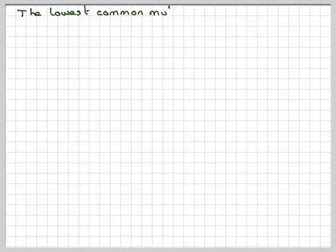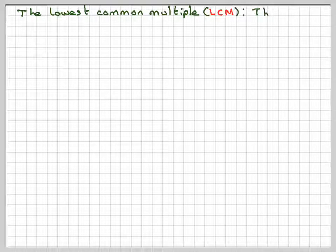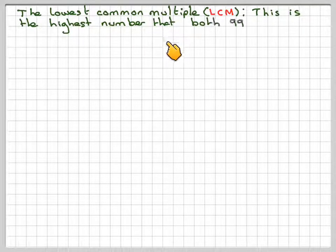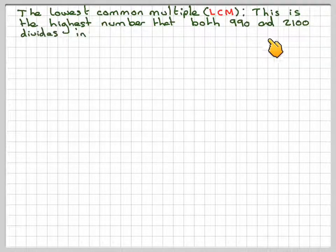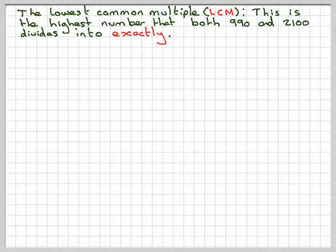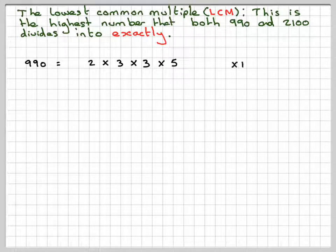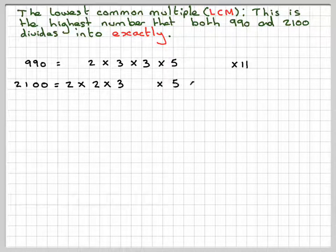Now to the LCM. What do we mean by the LCM? It's called the lowest common multiple. This is the highest number that both 990 and 2,100 divide into exactly. It's quite like what you do with fractions, finding the lowest common multiple for the denominator. Again, it can be done with prime factors. We list them again in the same way.